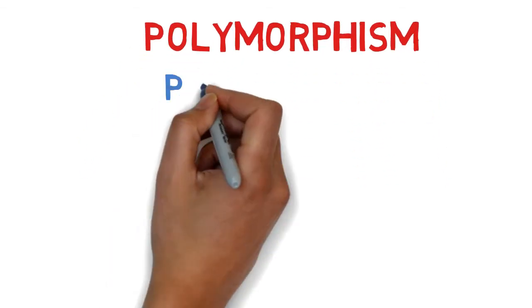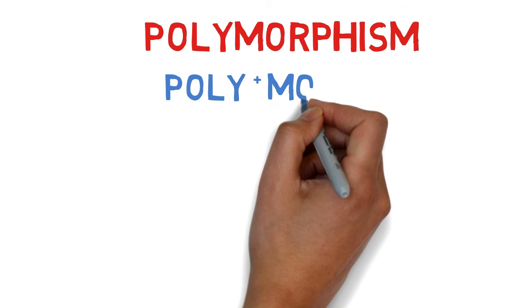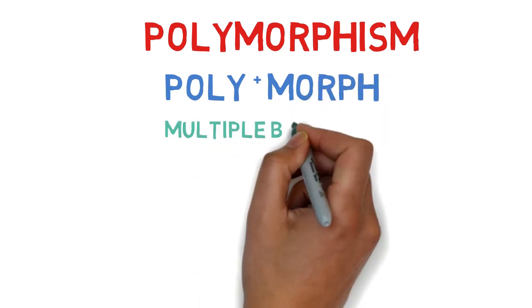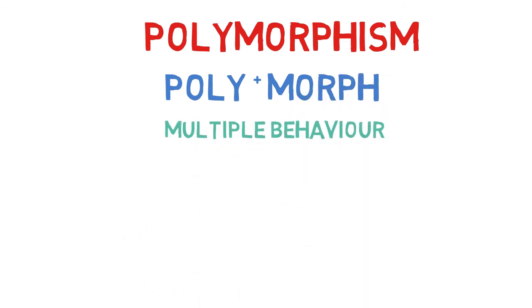In simple terms, the meaning of polymorphism is in the word itself. It means poly plus morph. Here poly means multiple and morph means behavior. So polymorphism simply means multiple behavior — that is, the same thing behaves in multiple ways in different scenarios.